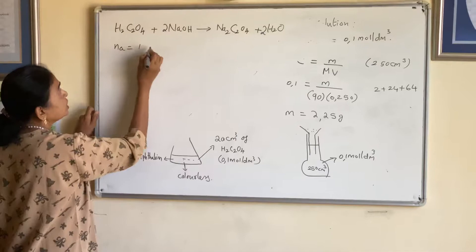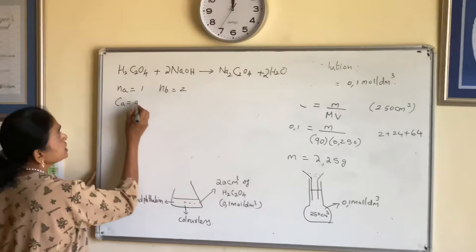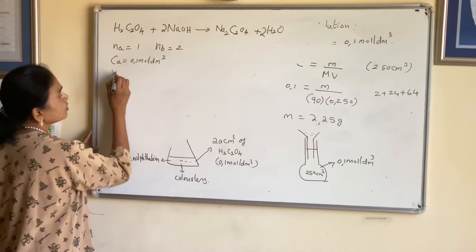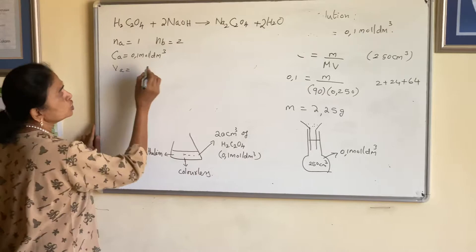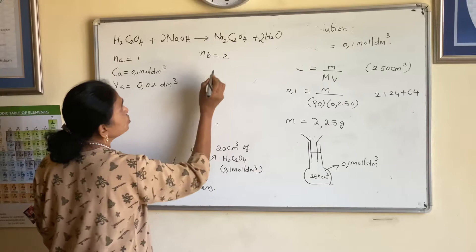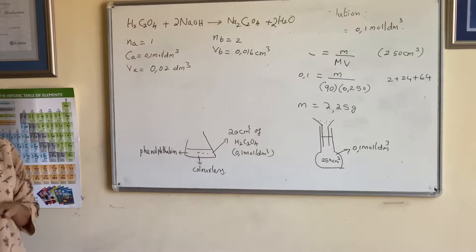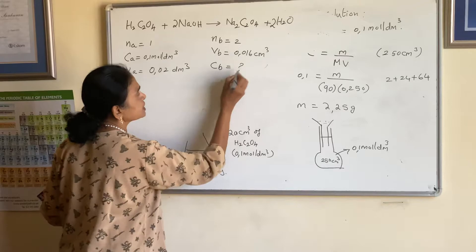Write down the values: the concentration of the acid is 0.1 mol per dm³, and the volume of acid used in the conical flask is 20 cm³. We divide that by 1000, so it is 0.020 dm³. For the base, the mole ratio is two, and the volume obtained was 16 cm³, which is 0.016 dm³.